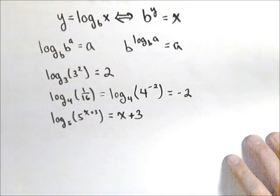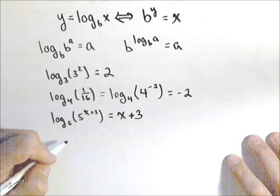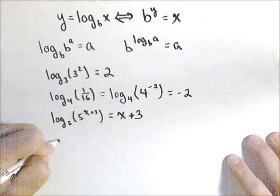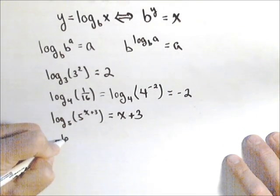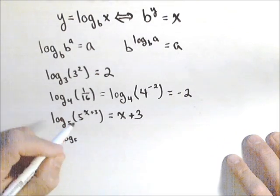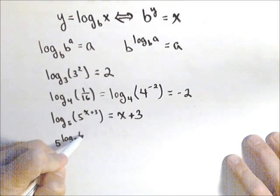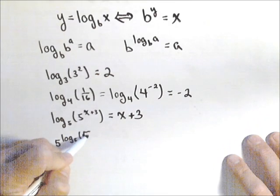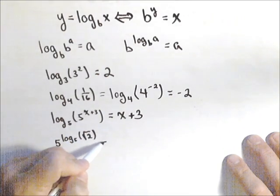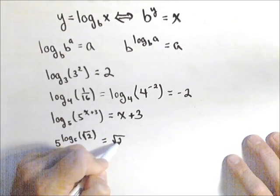So that's our inverse property, and it works in both directions. So if I had five raised to the log base five of square root of two, that's equal to the square root of two.